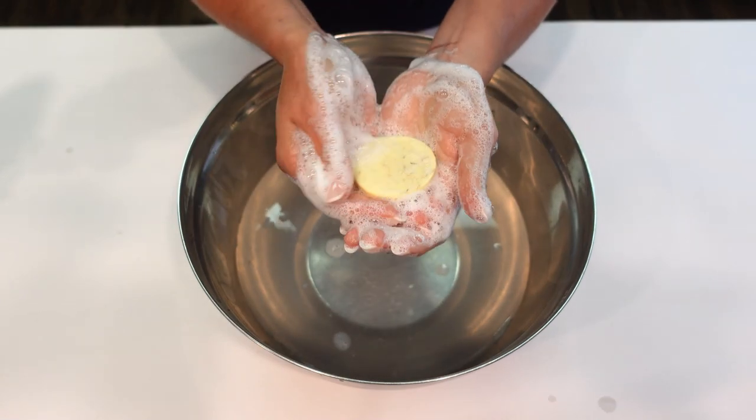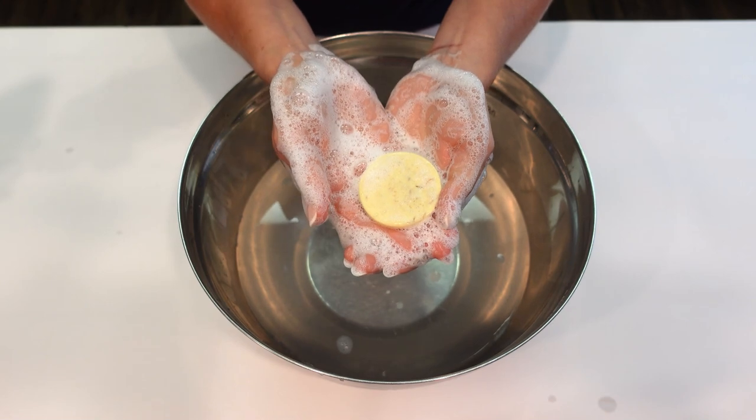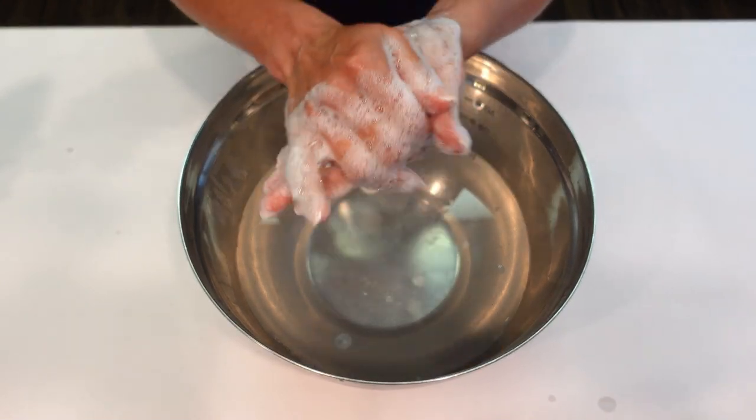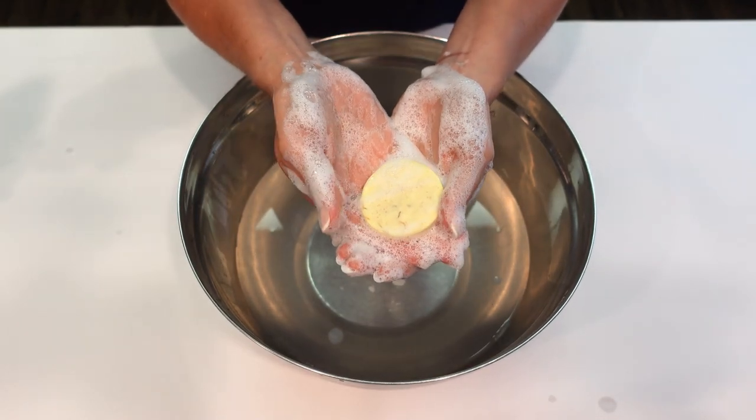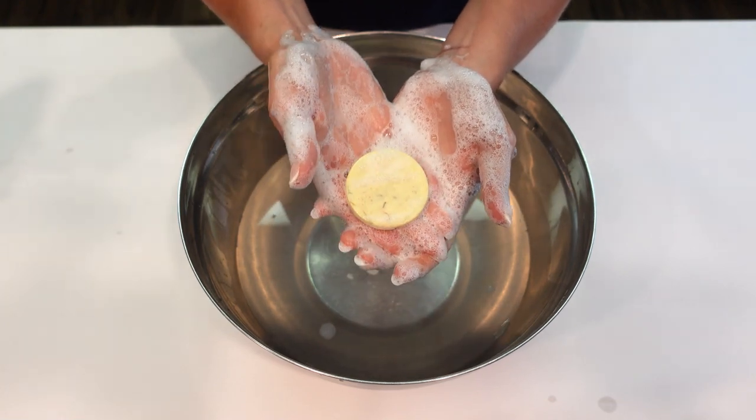And there you go guys, that's how you make a beautiful syndet bar with a melt and pour base. I really hope you liked this video. If you did, please remember to give it a thumbs up. Please leave me some comments and questions below, share this video with a friend, and subscribe to my channel. Alright everybody, catch you on the next video. Keep shining, bye!